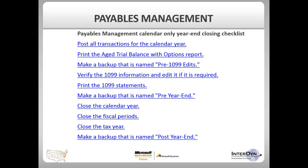This is the checklist if you are only closing your calendar year and your fiscal year resides in a different time frame than the calendar year. First, post all transactions for the calendar year. Print the Age Trial Balance with Options report. Make a backup named Pre-1099 Edits. Verify the 1099 information and edit it if required. Print your 1099 statements. Make a backup named Pre-Year End. Close the calendar year. Close the fiscal periods. Close your tax year. Then make a final backup named Post-Year End.